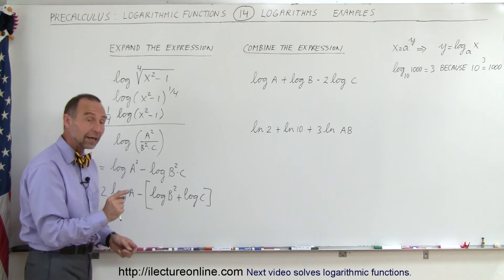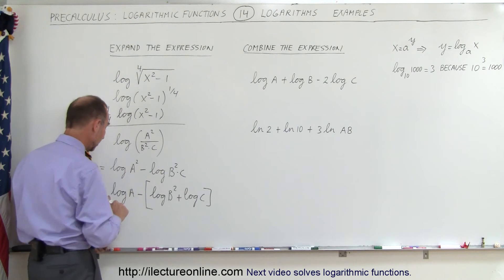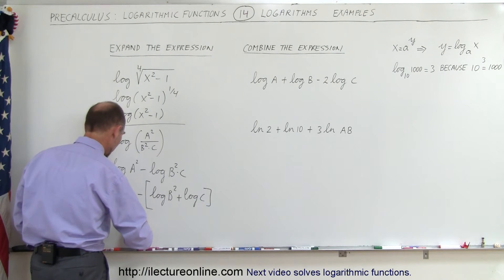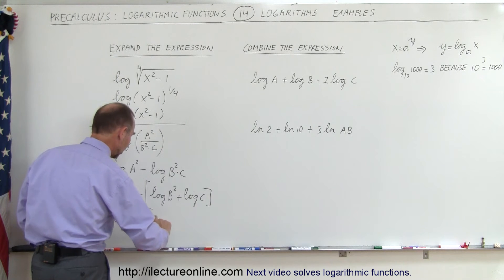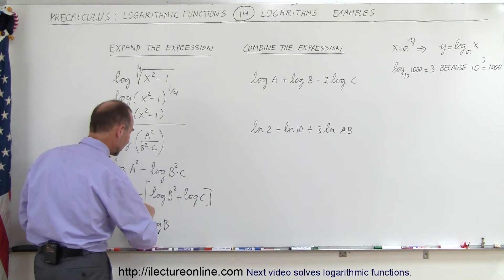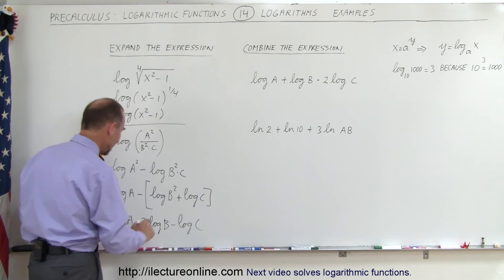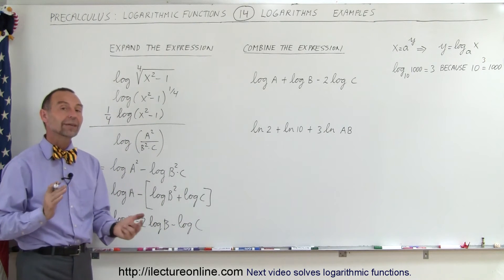And then finally we have the exponent again, so we can bring that exponent in the front, so this can be written as two times the log of a minus two times the log of b, and then applying this negative sign minus the log of c, and that would be the final form if you want to expand it.